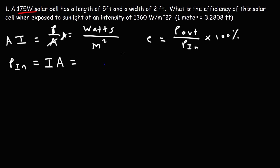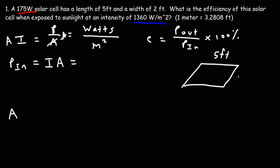We already have the solar intensity — it's 1360 watts per square meter. But pay attention to the unit 'square meter,' because we don't have the dimensions of the solar cell in meters; we have them in feet. So we need to convert. Drawing a picture of the solar cell, we have a length of 5 feet and a width of 2 feet. Length times width gives us an area of 10 square feet.